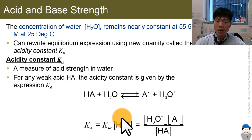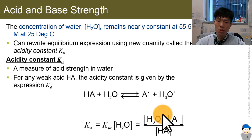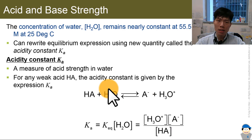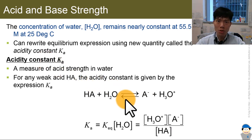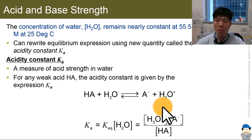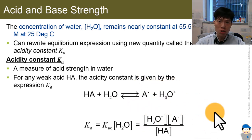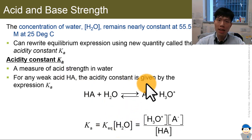We can simplify the Ka expression — also called the acid dissociation constant or acidity constant — by dropping the water term, since water is in excess in the acid medium and virtually doesn't change. Ka measures the strength of an acid. A strong acid dissociates fully, giving a high numerator and low denominator, resulting in a very high Ka. So high Ka means stronger acid, and weak acid has a low Ka because it holds back its H+.